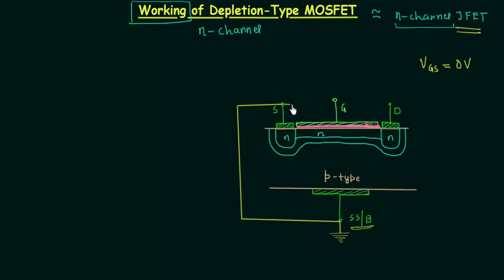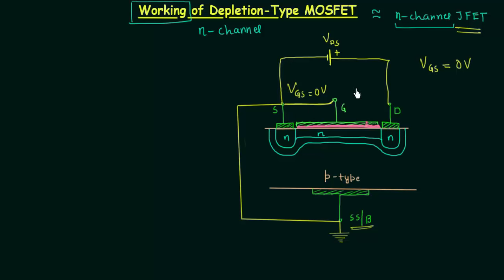We will make VGS equal to 0V by connecting the source and the gate. Now if we apply voltage VDS across the drain to source terminal — positive terminal connected to the drain and negative terminal to the source — because of VDS, current ID will flow through the channel. Electrons in the channel are attracted towards the positive drain terminal, and the equivalent current is established flowing in the opposite direction.